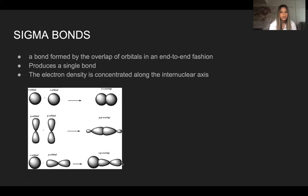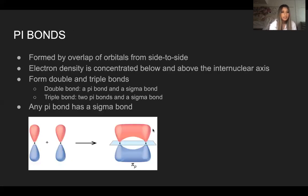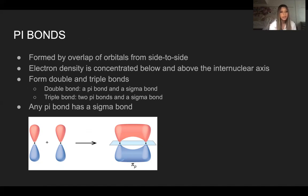There's the internuclear axis and the electron density is concentrated along that. With pi bonds, they're formed by an overlap of orbitals from a side-to-side fashion, and electron density is concentrated below and above the internuclear axis. They form double and triple bonds. For double bonds they have a pi bond and a sigma bond, and for a triple bond we have two pi bonds and a sigma bond. Any pi bond has a sigma bond — that's an important key thing to remember.